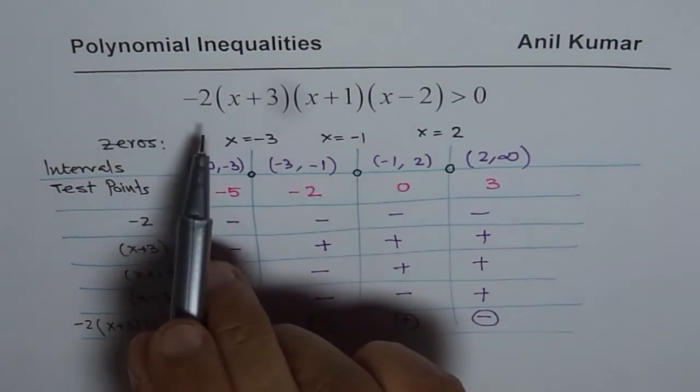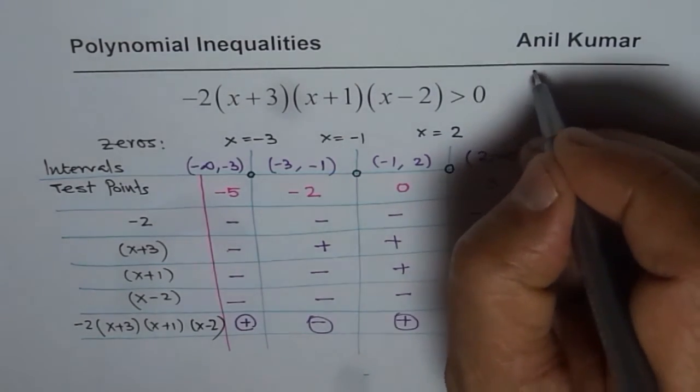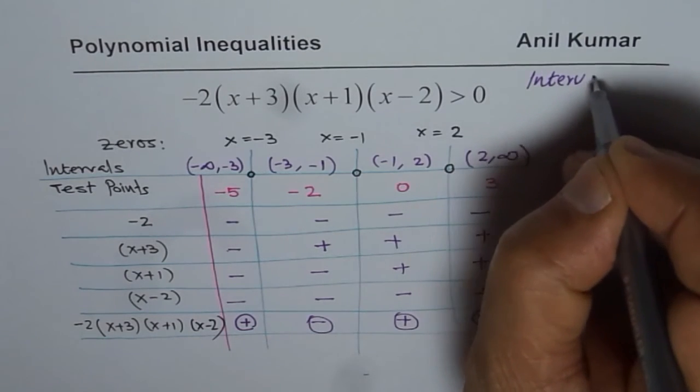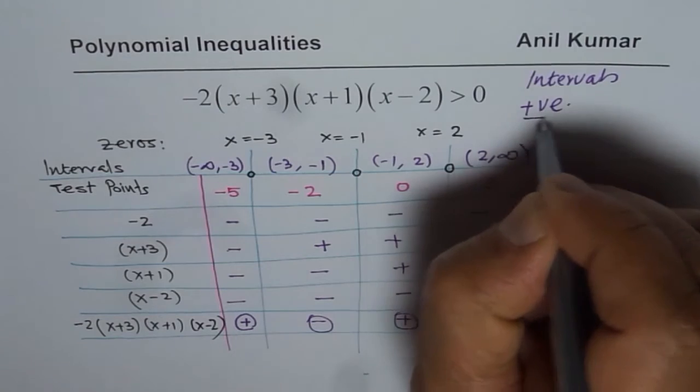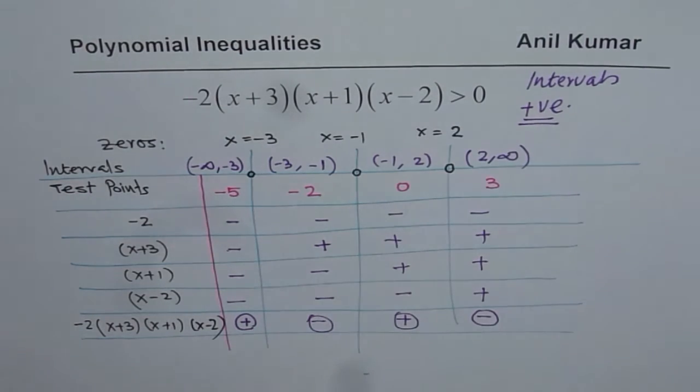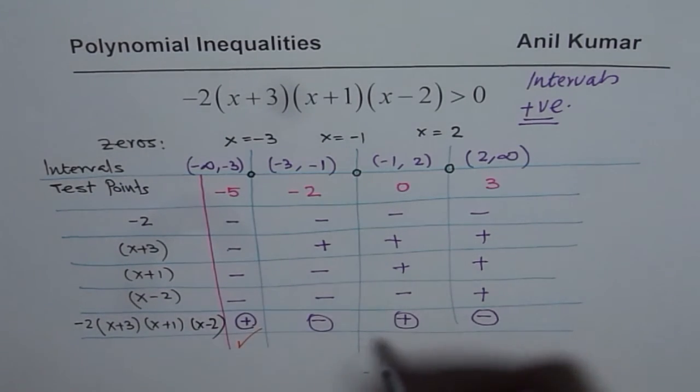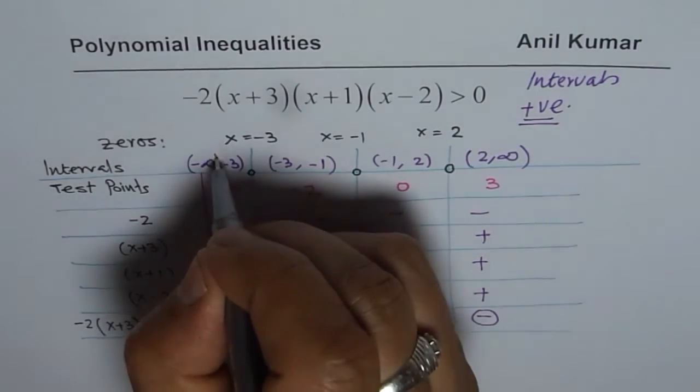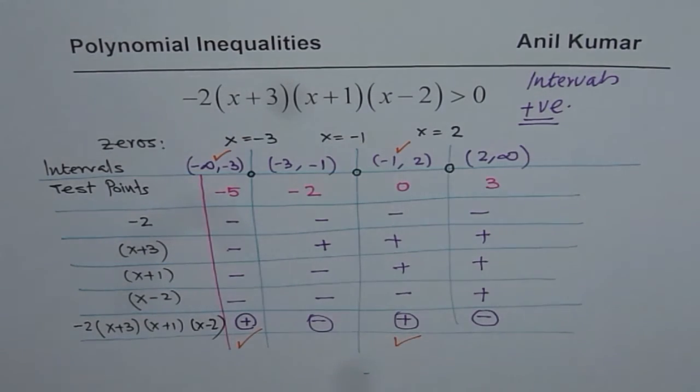When we see that this polynomial is greater than 0, what are we looking for? We are looking for intervals where the function is positive. So we get our answer. The function is positive in these two intervals, and therefore that is our answer.